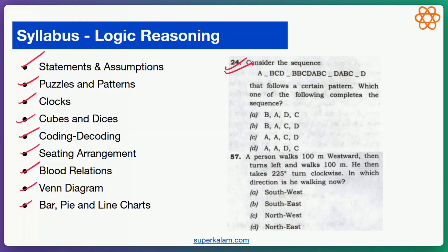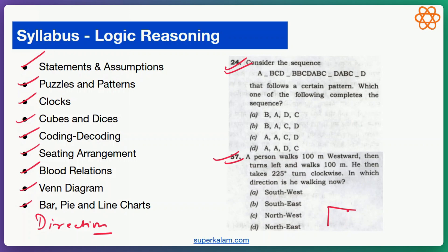For example, there is a problem of puzzles and patterns where a recurring pattern appears in a sequence of text and you have to identify it and find which letters or characters will fill the blank spaces. Direction questions are also asked in logical reasoning — a very easy example: a person walks 100 meters westward, then turns left and walks 100 meters, then takes a 225-degree clockwise turn. You have to find in which direction he is now walking.